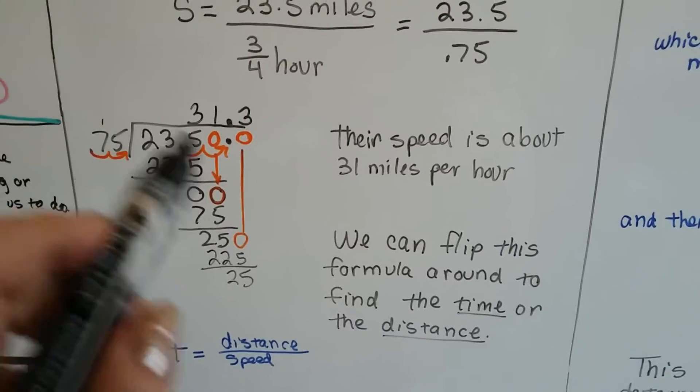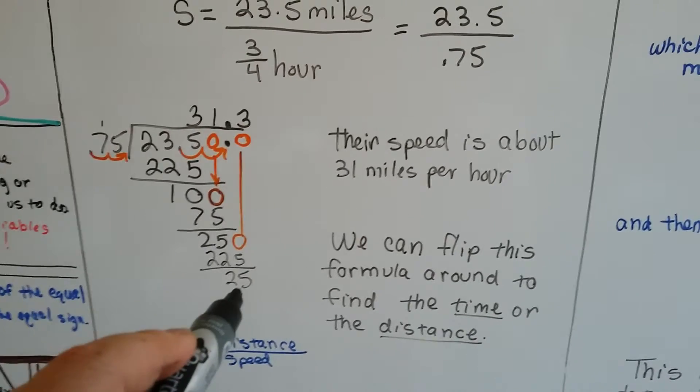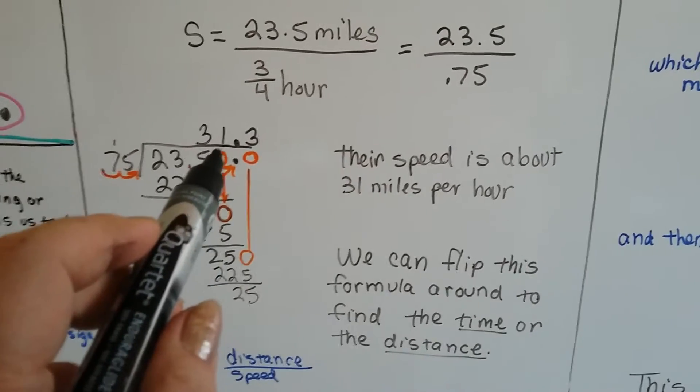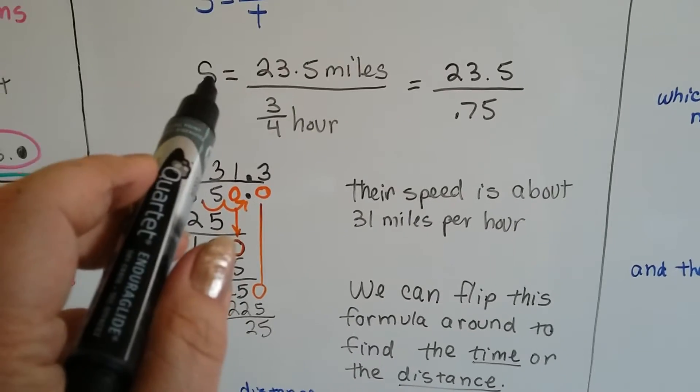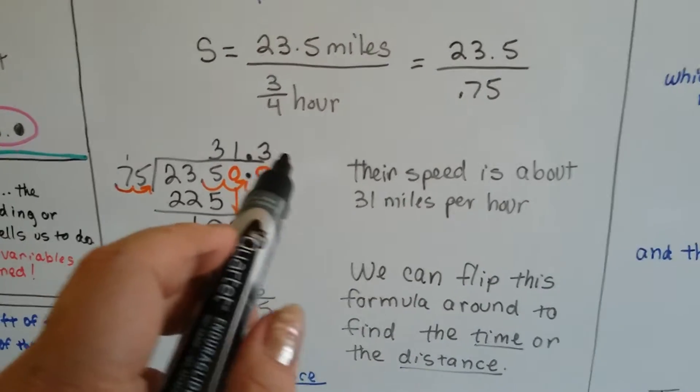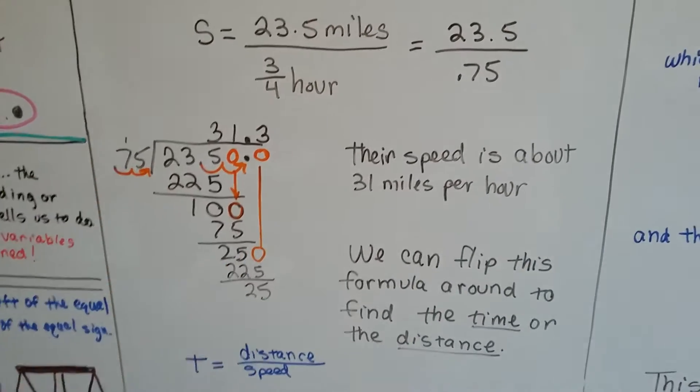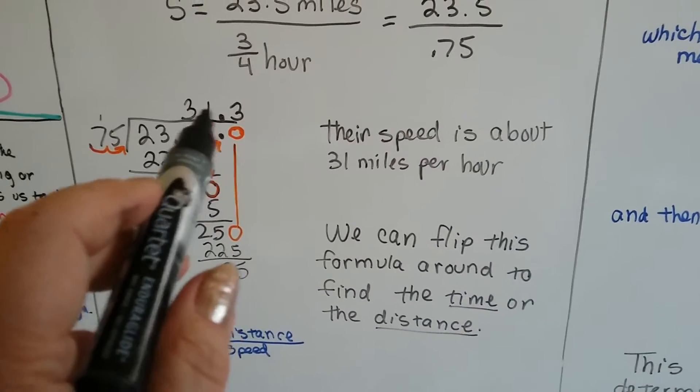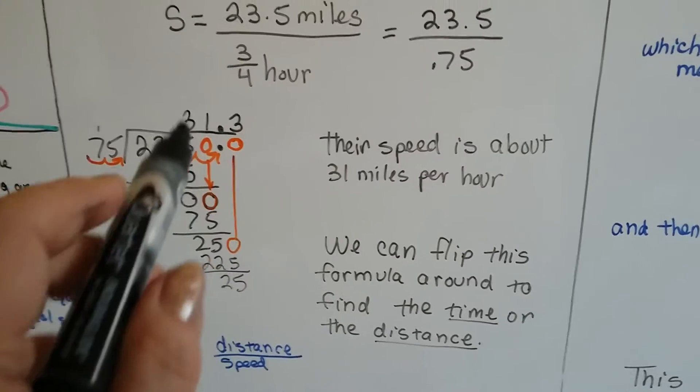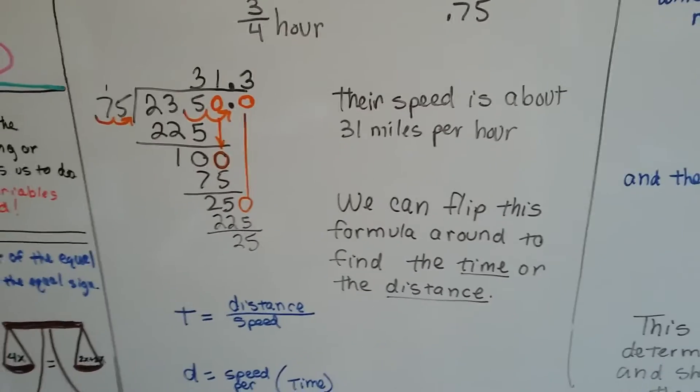So now after doing all my division it didn't come out to zero but I knew I was going for miles per hour, I was going for their speed. So I didn't want little decimal points for their speed. I just wanted roughly 31 miles per hour. So I didn't need to know they went 31 and a third miles per hour. I just 31 miles per hour is good enough.